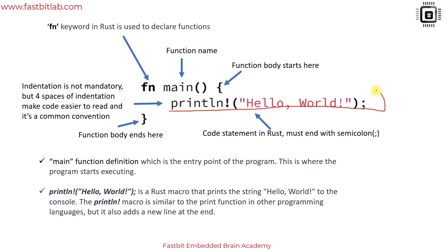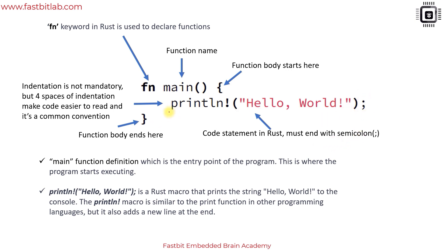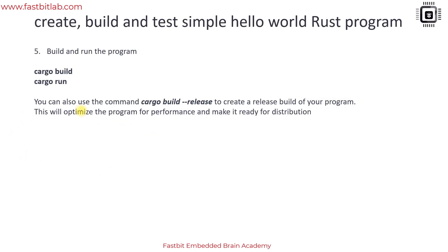Code statements in Rust must end with a semicolon — this is mandatory. The println! macro prints the string 'Hello, World!' to the console, which is the standard output. It ends with an exclamation mark, which indicates it is a macro. This macro is similar to print functions in other languages and also adds a new line at the end.